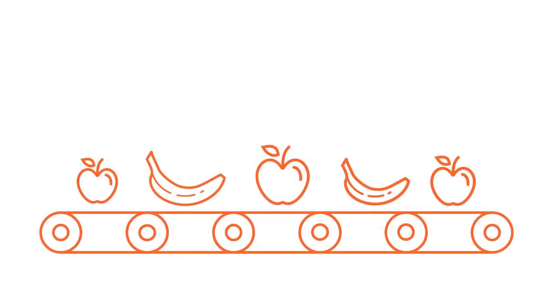For example, imagine we have a conveyor belt of fruit of different sizes. We need to separate the apples from the bananas as they go by. However, we only have sensor readings of each fruit's length and height. How would we build a model to predict which fruit is an apple and which fruit is a banana?